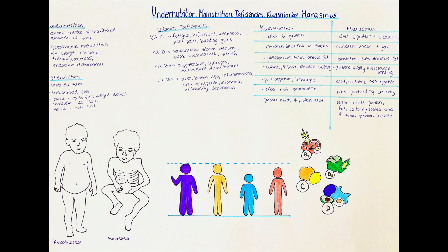Vitamin B1 deficiency shows with hypotension and syncopes and neurological disturbances such as tingling sensations and cramps. Vitamin B6 deficiency shows with changes in the skin color, rashes and broken lips, as well as inflammations of the skin and gums, loss of appetite, insomnia, irritability and depression.